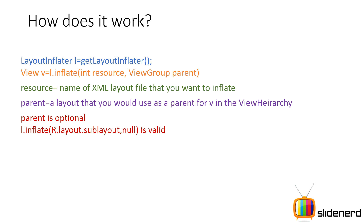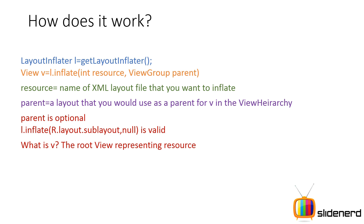The parent is optional — you can simply say L.inflate(R.layout.sub_layout, null). R.layout.sub_layout is the name of an XML file called sub_layout.xml, inside your res/layout folder. What is V? V is the root view representing the resource. If your sub_layout.xml contains only a TextView, V is going to be equal to that TextView object. If it contains a LinearLayout with a TextView inside, V is going to be equal to the LinearLayout — the root inside that XML file.